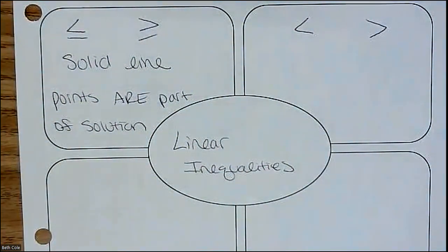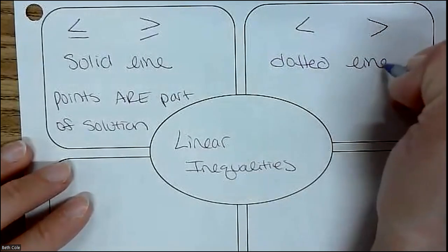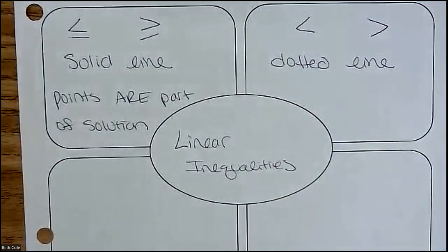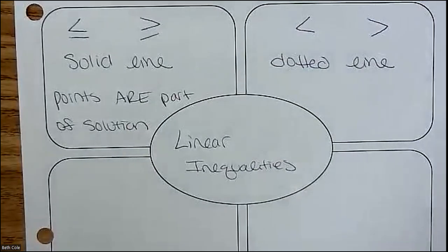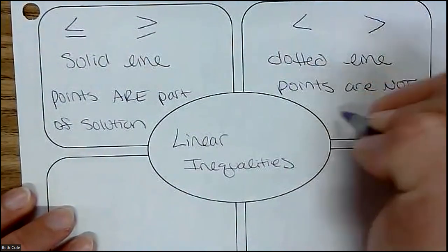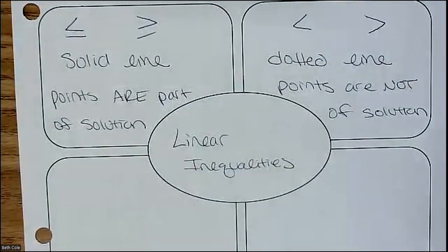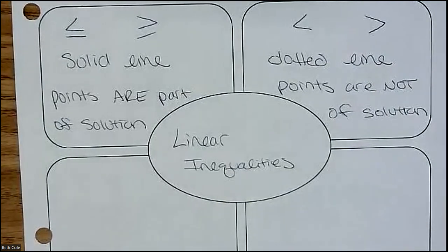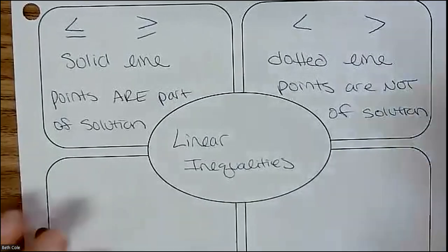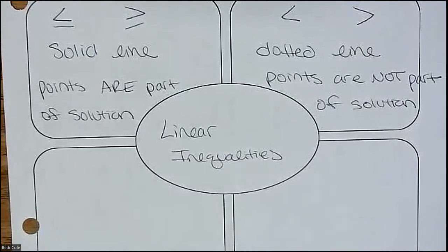All right, if you see one of these, instead of a solid line, what's like the other option of a line we could do? A dotted line, or like a dashed line. And so the points on that line are not part of the solution. They don't count because there's not an equal to on there. If there's an equal to, it's part of the answer. If there's not an equal to, it's not part of the answer. Does this logically make sense to us?